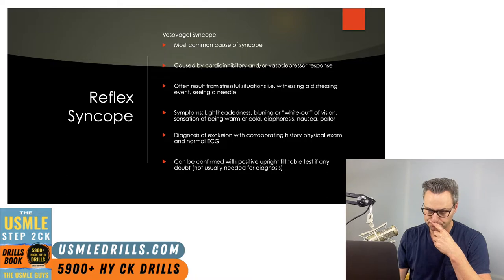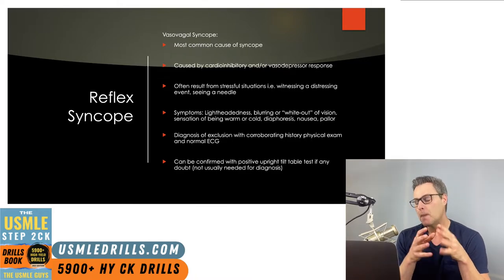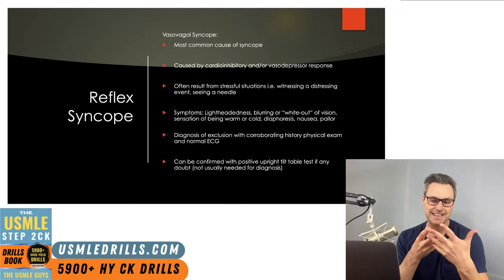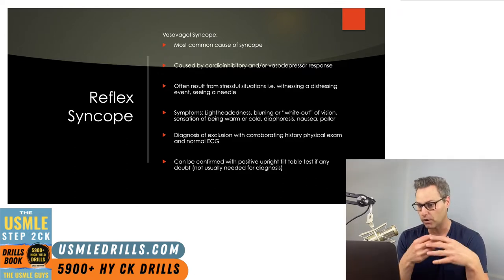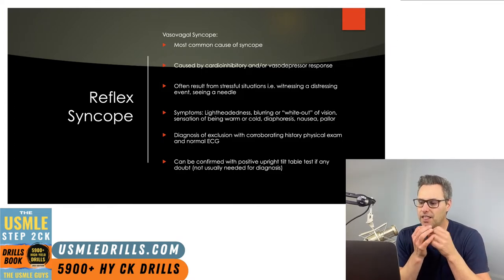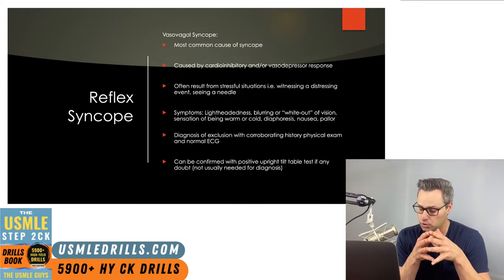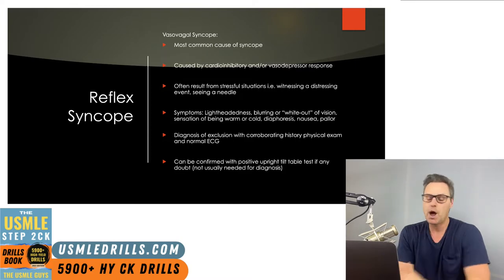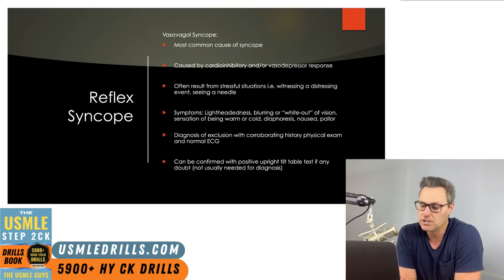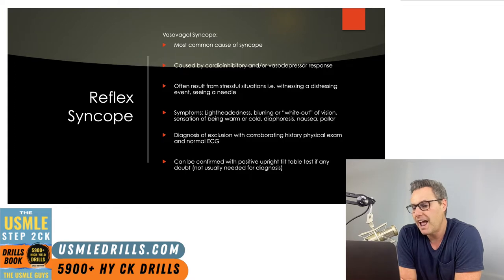There may not always be a stressful trigger, but this is the type of syncope you think of when someone passes out after hearing bad news about a loved one or when they see a needle when they're getting a shot — things like that. Events that are distressing to the individual should always be considered here. Prior to the syncope episode, the patient may report lightheadedness, blurring of vision, sweating, nausea, a sensation of being warm or cold, and witnesses may note pallor.